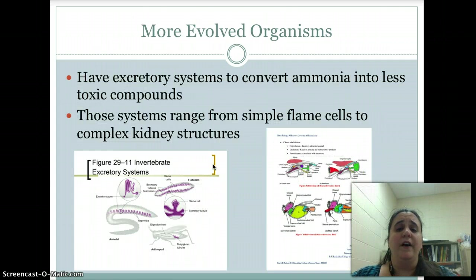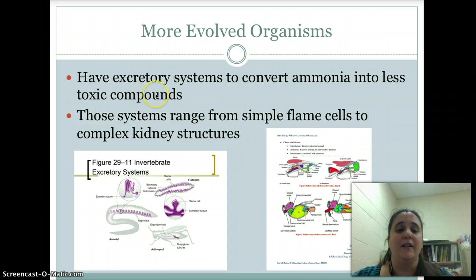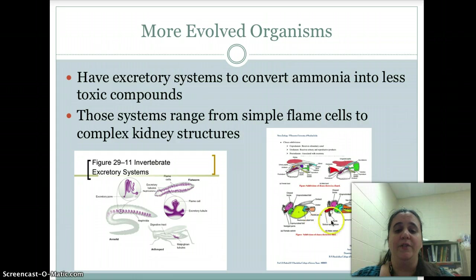The more evolved organisms, however, have special excretory systems to convert ammonia into less toxic compounds. We have simple flame cells all the way up to complex kidney structures, and we'll go through each one of those in a little bit more detail.